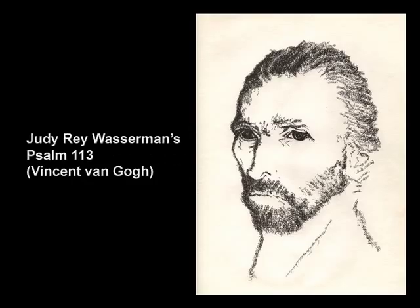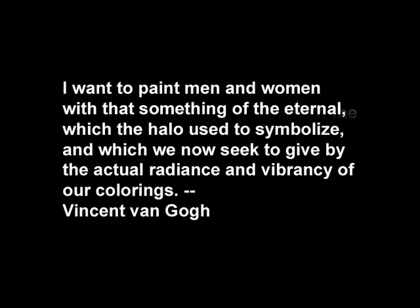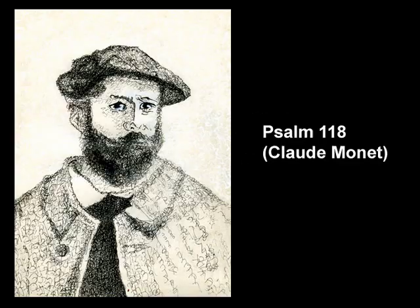Van Gogh said, "I want to paint men and women with something of the eternal, which the halo used to symbolize, and which we now seek to give by actual radiance and vibrancy of our colorings." Instead of color, I use symbols to reveal the divine.